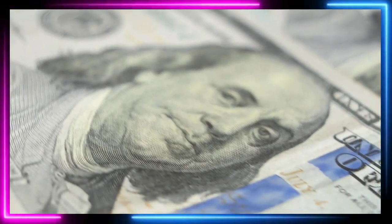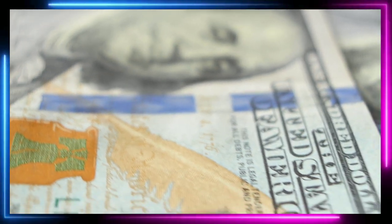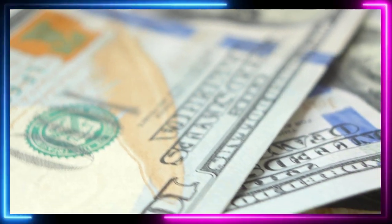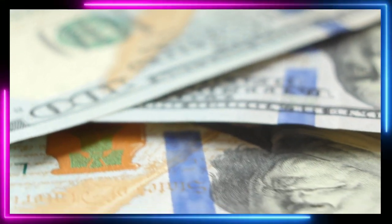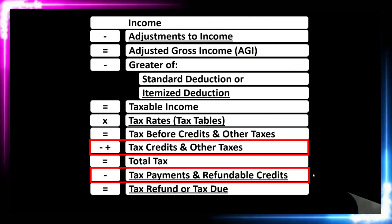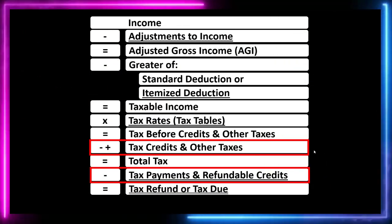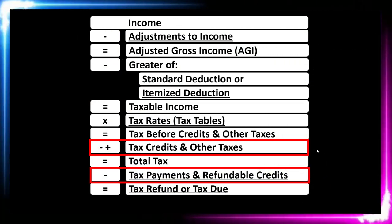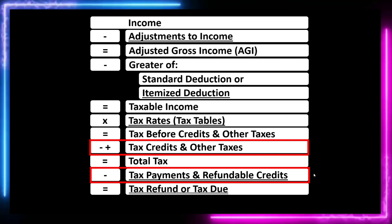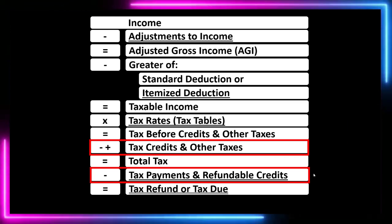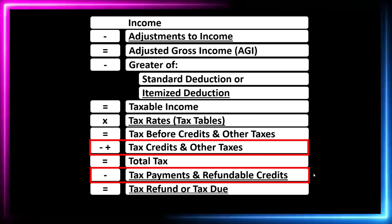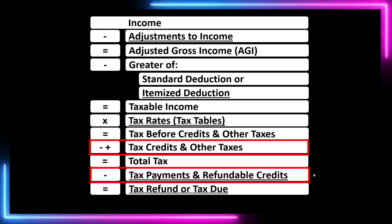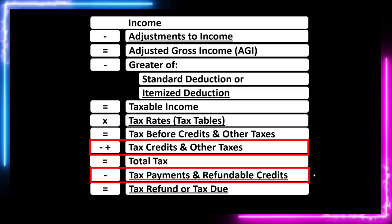We have two categories of credits: refundable credits and non-refundable credits. Non-refundable credits don't take the tax liability below zero. Refundable credits could result in a refund — which isn't really a refund in the traditional sense, but more of a benefit program in that instance.